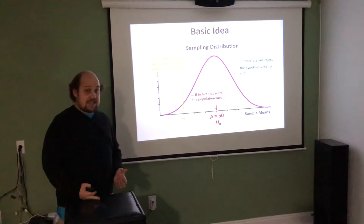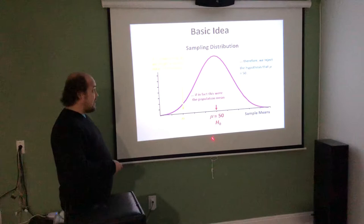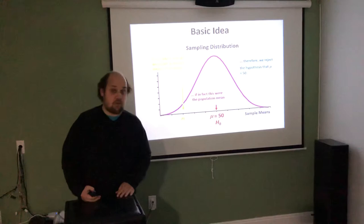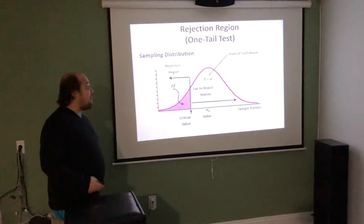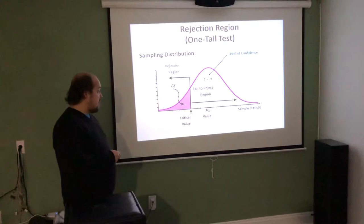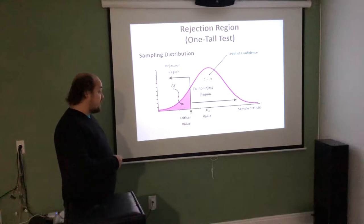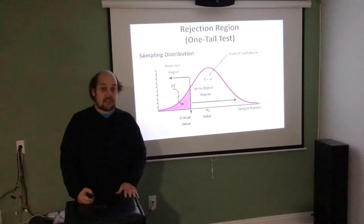We need to put math to this — we're going to see how we calculate test statistics, find p-values, and make comparisons. For right now, the general idea is: here's what the distribution would look like under the null; here's where our sample falls. If it's far enough into one of the tails, we'll be able to reject. For a one-tailed left test, anything past the critical value into the shaded region means we reject the null.